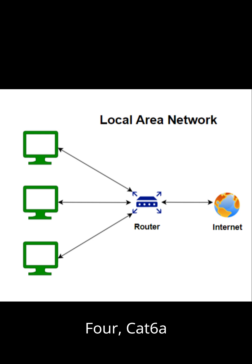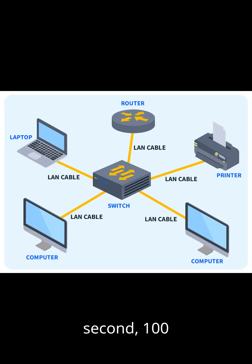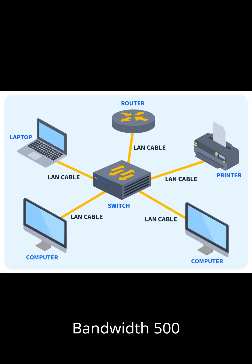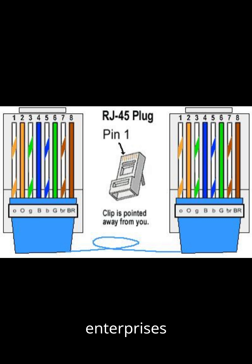4. CAT 6A (Augmented CAT 6): Speed up to 10 Gbps at full distance, Bandwidth 500 MHz. Features better shielding and is a heavier cable. Suitable for enterprises and data centers.